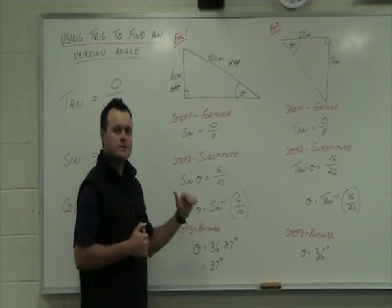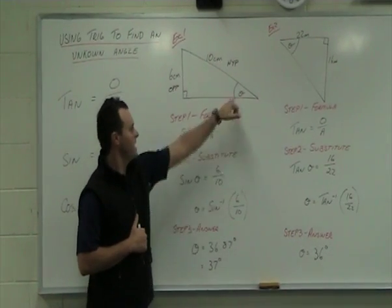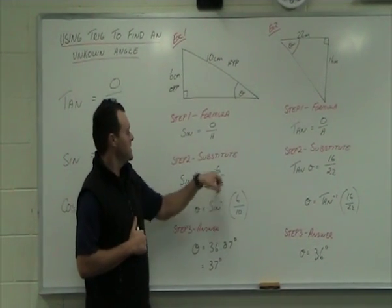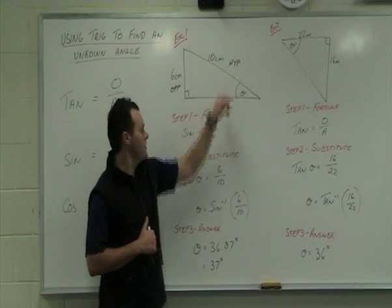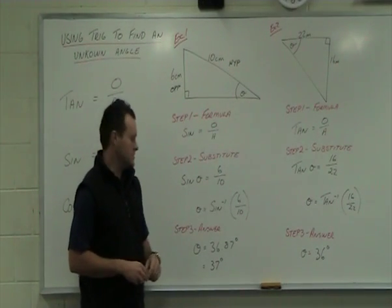Step two, then, is to substitute in. So sine of angle theta is equal to 6 over 10, which is our hypotenuse.